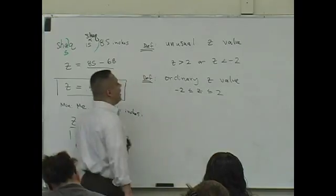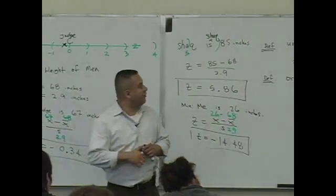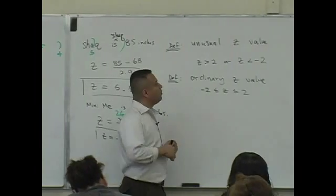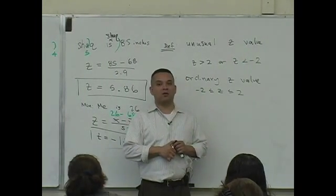So, any value between two and negative two is considered ordinary. If you're larger than two, it's unusual. Or if you're smaller than negative two, it's unusual.